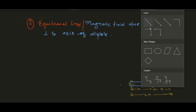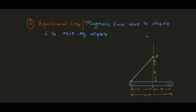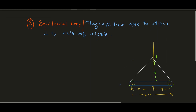We calculate the magnetic field at point P by drawing lines joining the poles to P. This distance is from the north pole to point P, and this is the distance from the south pole to point P. In the case of magnetic field, the north pole always originates the magnetic field, so its direction is away from N. This is the magnetic field due to the north pole at point P. Similarly, the magnetic field due to the south pole always terminates into it.